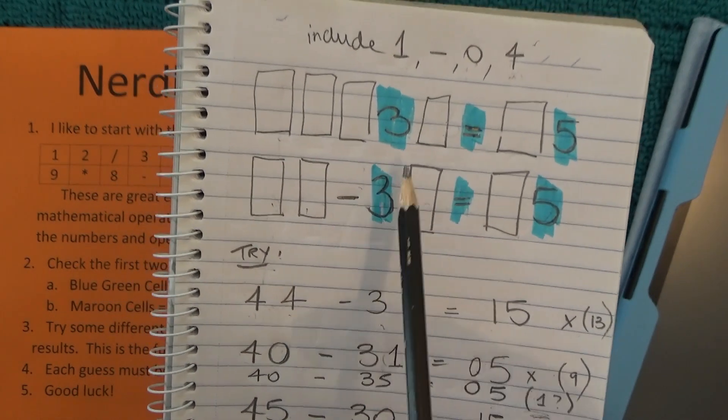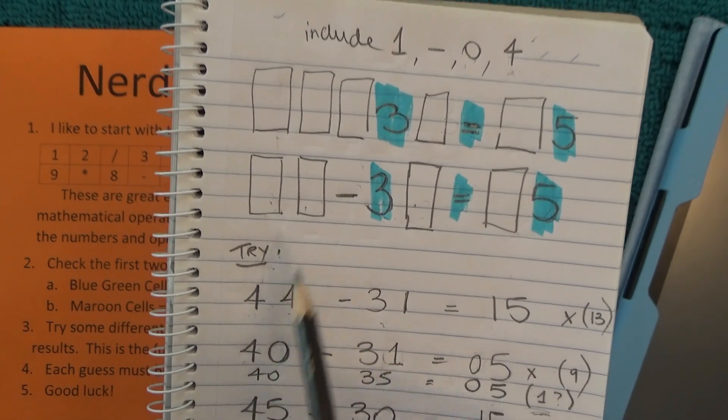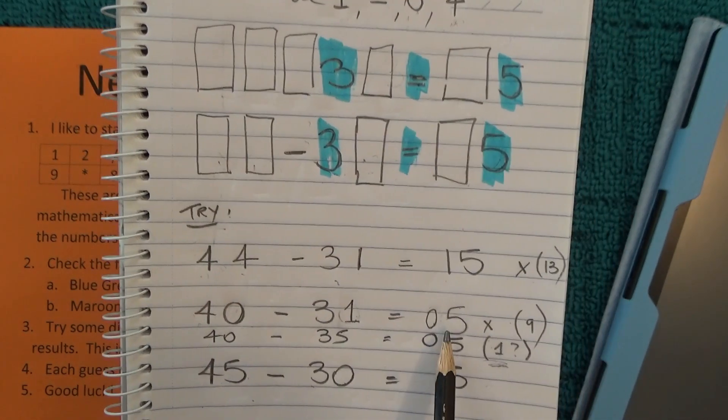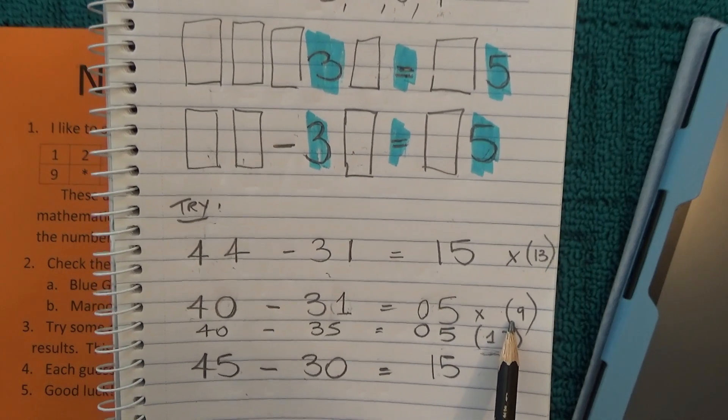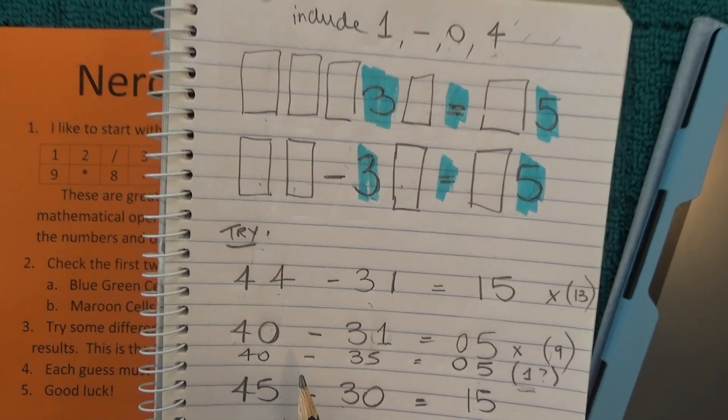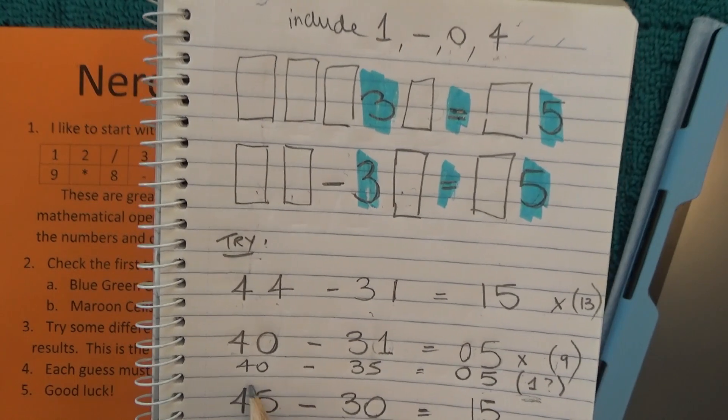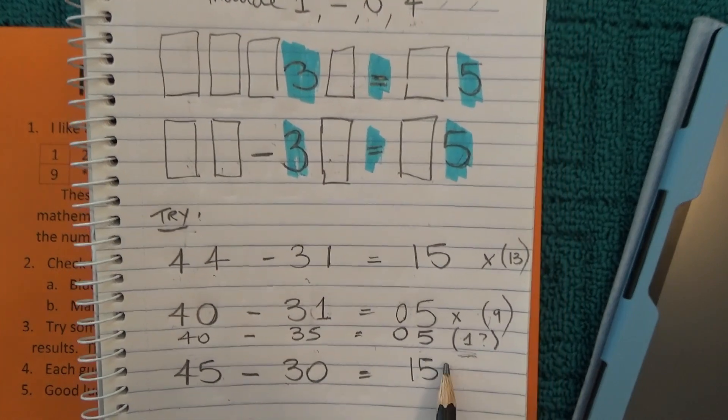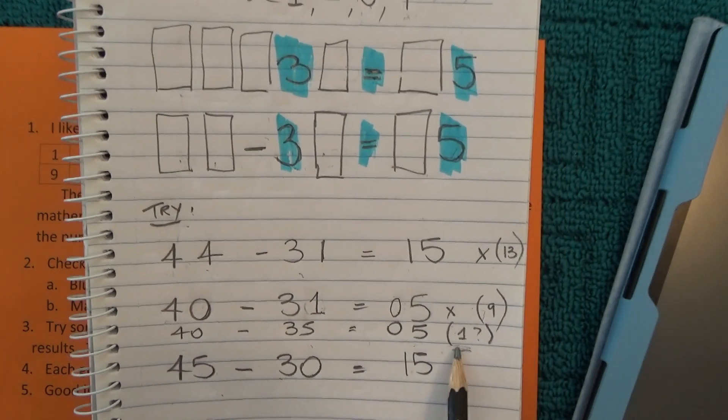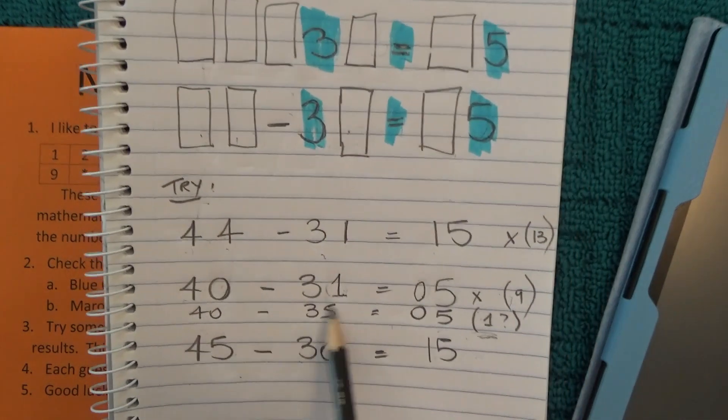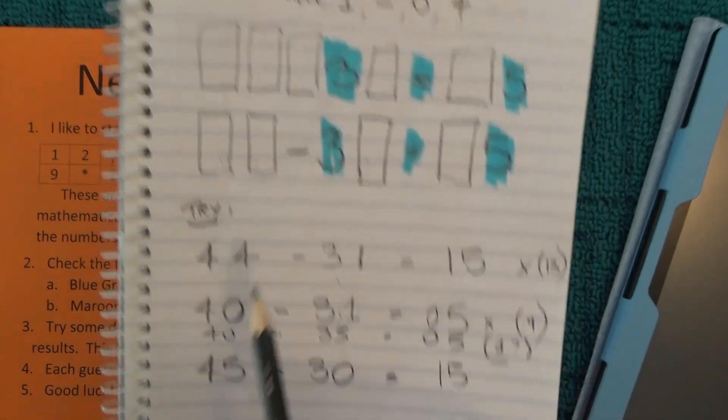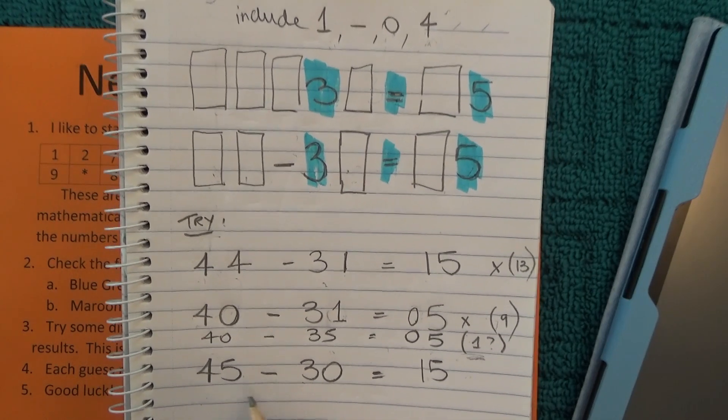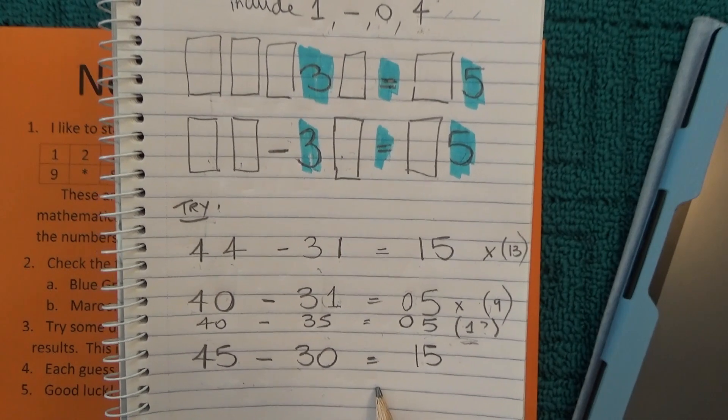And then I might try 40, which is the 4 and the 0 in there, minus 31, which actually just equals 9. So that can't be correct. This one, 40 minus 35, equals 5. So that actually could be correct. The only thing is that we've got to include 1, and that equation doesn't include the 1 anywhere there. Then I come down to this final equation, which is 45 minus 30 equals 15.